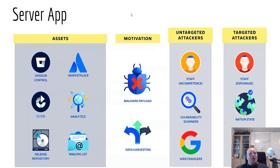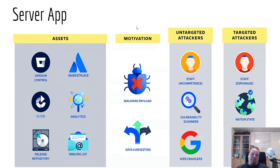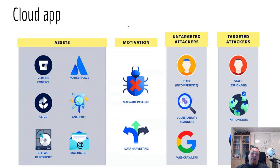Here's another example called the server app. I'm not going to go into too much detail since you already follow the pattern — we have assets, motivation, untargeted and targeted attackers again. And we also have a cloud app example to show other things that could be in the assets list: release repository, CI/CD.